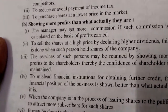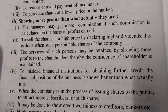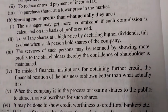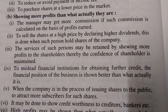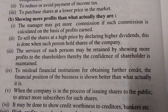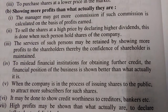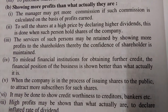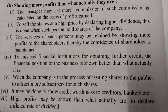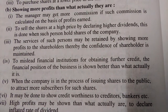In showing more profits, they try to manipulate for seven types of benefits. First, the manager may get more commission if such commission is calculated on the basis of profits earned. Second, to sell the shares at a high price by declaring higher dividends — this is done when such persons hold shares of the company. Third, the services of such persons may be retained by showing more profits to the shareholders, thereby maintaining the confidence of shareholders. Fourth, to mislead financial institutions for obtaining further credit, the financial position of the business is shown better than what it actually is.